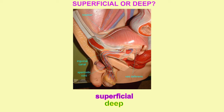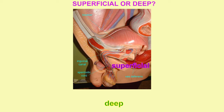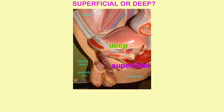The vas deferens is very superficial, just deep to the skin, as it passes through the spermatic cord. But once the spermatic cord enters the inguinal canal, the vas deferens then goes around the ureter and bladder and is now much deeper compared to its superficial position in the spermatic cord.